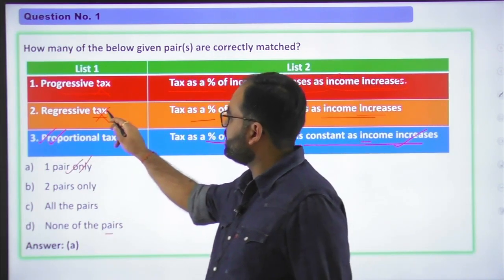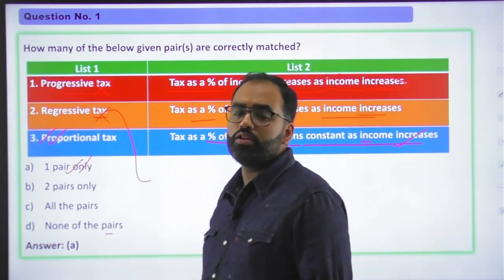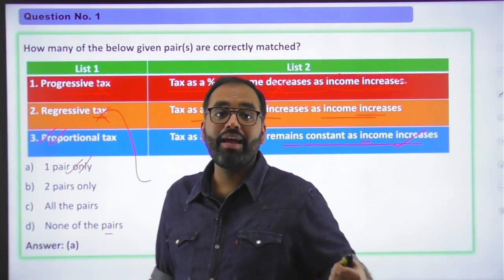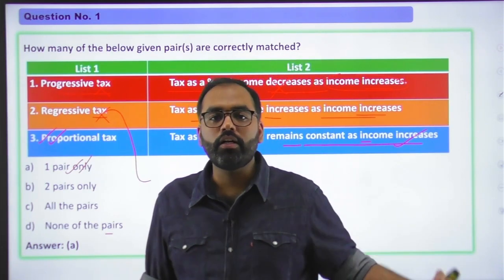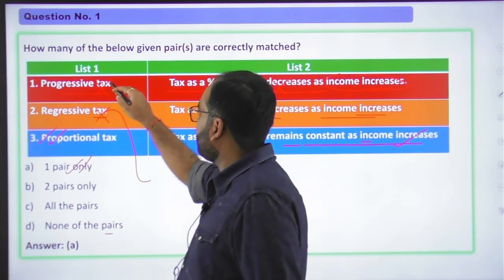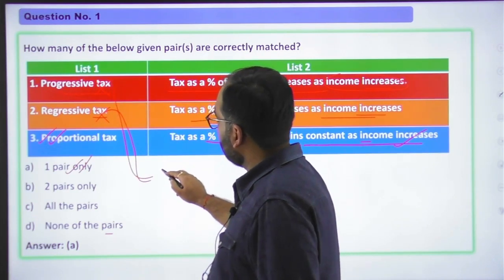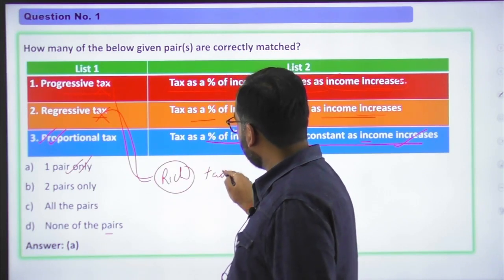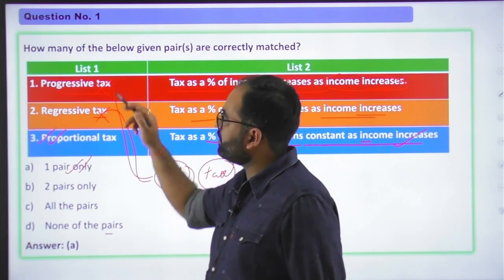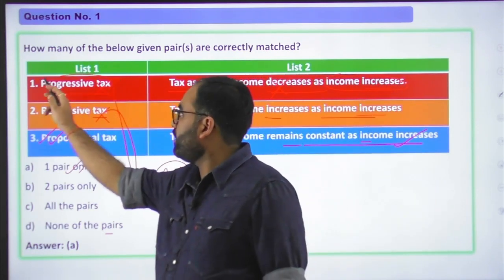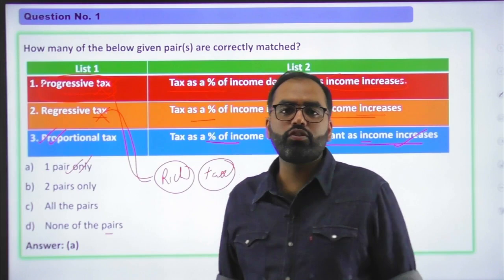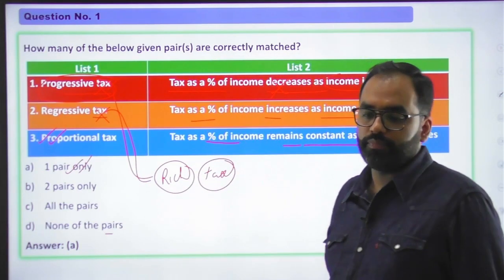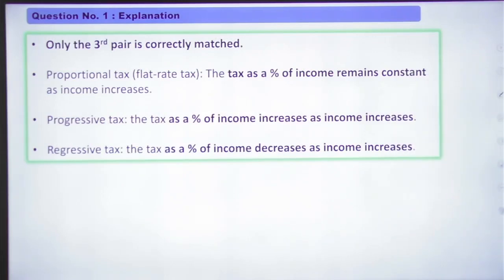When we talk about regressive tax, we see that the burden is more on the poor. Comparatively rich, the burden is less. Progressive tax, the burden is more on rich, they will be charged more percent of tax. This is why we are talking about progressive tax. So generally direct taxes are progressive in nature, and the ones which are indirect taxes are regressive in nature. So this is the explanation.